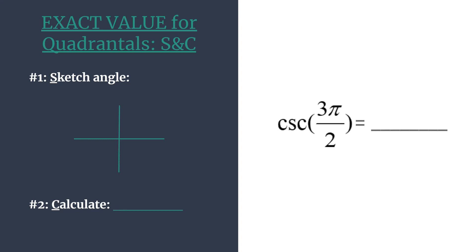So this time we'll do the cosecant of 3 pi over 2. Let's sketch our angle — it's in radians and it's a positive angle, so we rotate counterclockwise, counting 0, pi over 2, pi, and here's 3 pi over 2. So our angle is here — that's the terminal side.